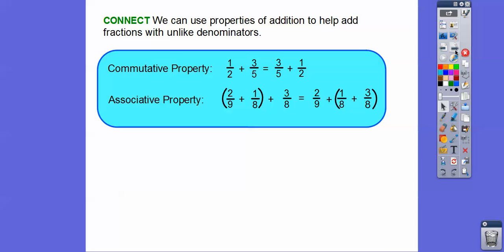So the commutative property — when I drive to work, I commute in my truck to work. The commutative property says one half plus three fifths equals three fifths plus one half. We just flip them around. These guys are commuting around the addition sign. This one half commutes over here and this three fifths commutes over here.